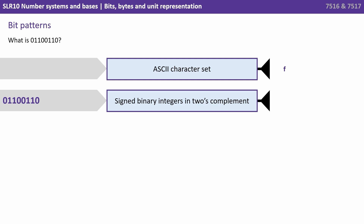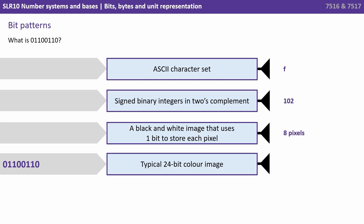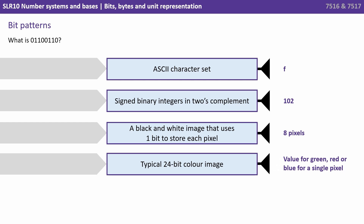The same bit pattern — the same eight binary digits — when interpreted as signed binary integers in two's complement, gives us the decimal number 102. When interpreted as a black and white image, what we'd get is a sequence of eight white and black pixels. The same sequence being interpreted as a typical 24-bit colour image would give us the information we need for the value of green, red, or blue of a single pixel.